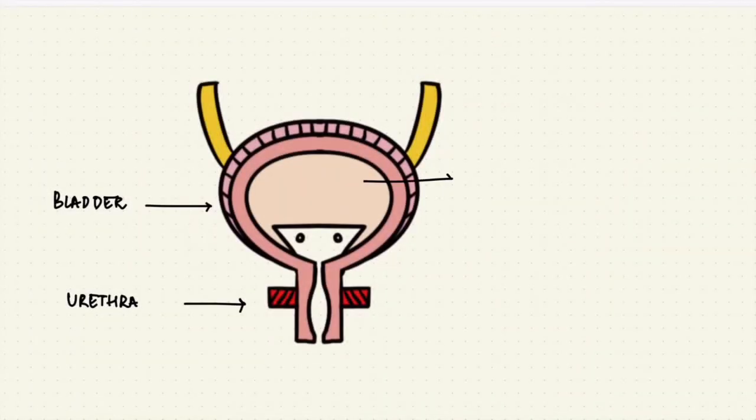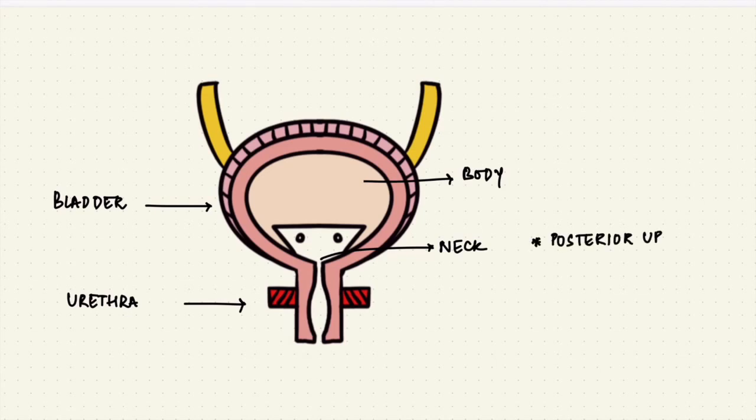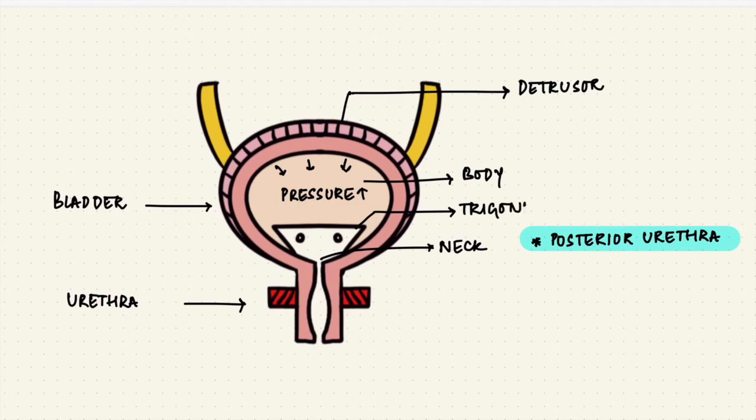The bladder has a body where the urine fills and a neck. The lower part of the bladder neck which continues with the urethra is called the posterior urethra. The wall of the bladder has smooth muscle, that's called the detrusor. When the detrusor contracts the bladder pressure increases. This is the trigone on the posterior wall which has the openings of the ureters.